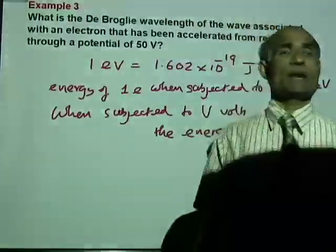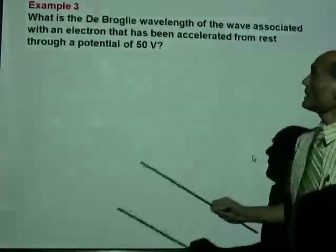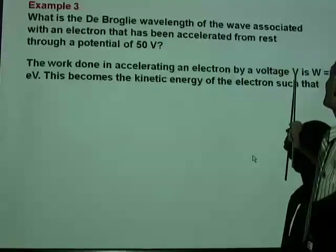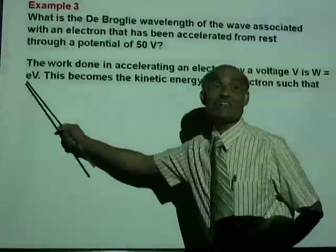All right. Let's do that now. So, the work done in accelerating an electron by a voltage V is E times V.